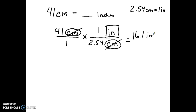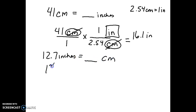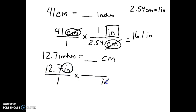That's conversion from metric to English. Now let's reverse it — starting with 12.7 inches and converting to centimeters. The first thing: take what I'm given and put it over one. Now I can use conversion factors. Since inches is in the numerator, I put inches in the denominator of the next conversion factor. I have a conversion factor that directly gets me from inches to centimeters — the same one as before — but notice inches must be in the denominator, so I have to put the correct coefficient.